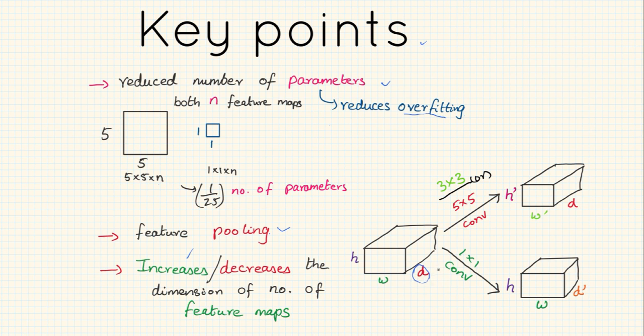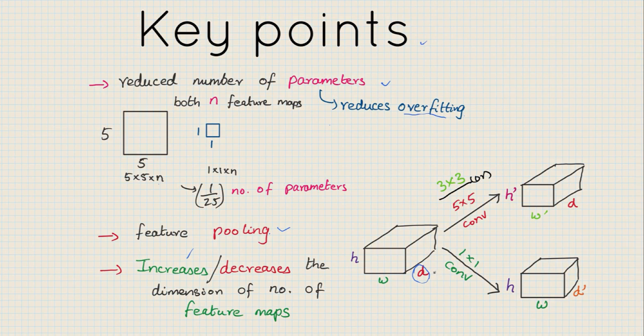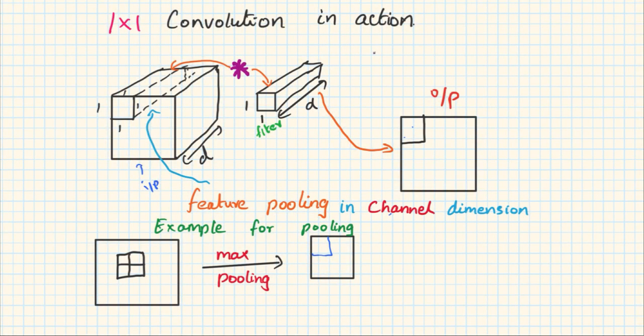So now let's look at 1 by 1 convolution in action. Let's see the working of a 1 by 1 convolutional filter. In this example, this is an input tensor, this is a filter, and this is the produced output. Note that the filter dimensions is 1 by 1 but the depth dimension matches with the input dimension of the tensor.